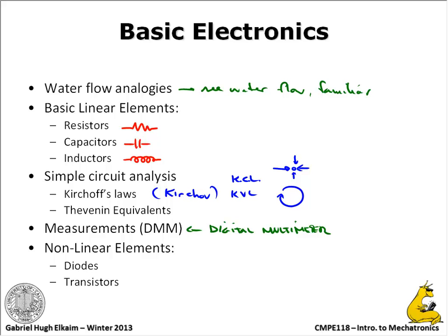And then we'll get into the nonlinear elements — the diodes. So there are regular diodes, light-emitting diodes, and Zener diodes. All of these essentially allow flow in one direction and not the other. That isn't actually strictly true — if you give them enough voltage they'll allow flow in both directions, but you can destroy almost anything. Once you destroy it, it's gone. Think of it as the hydraulic equivalent of a check valve — it goes in one direction and won't flow backwards.